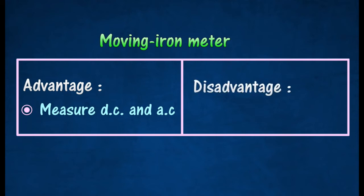The disadvantage of a moving iron meter is that its scale is not linear.